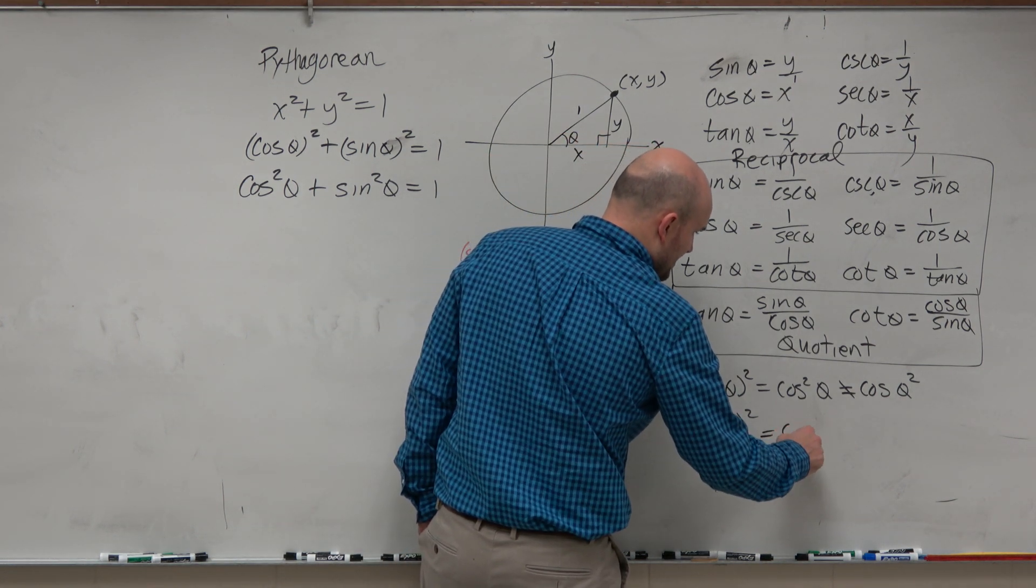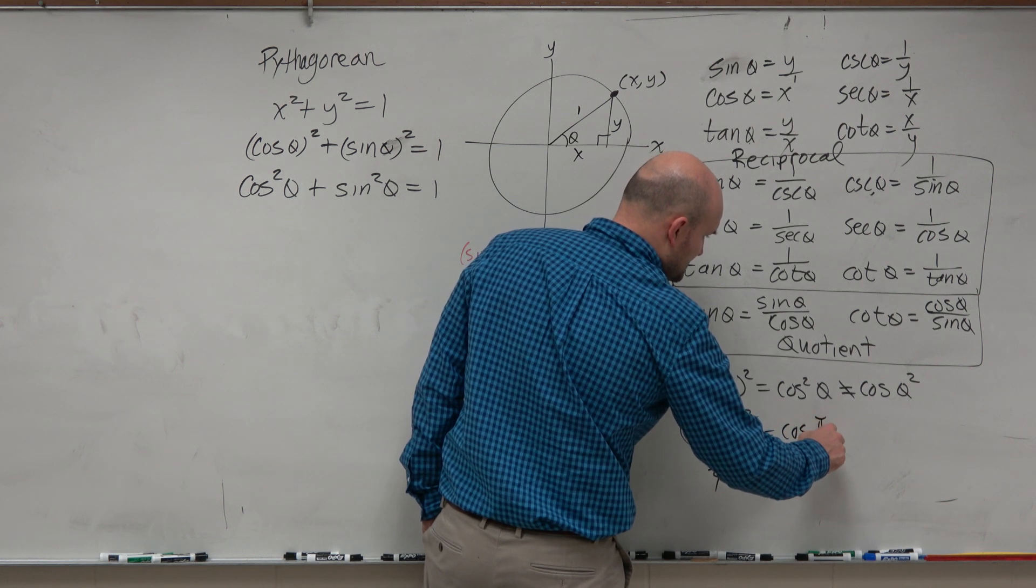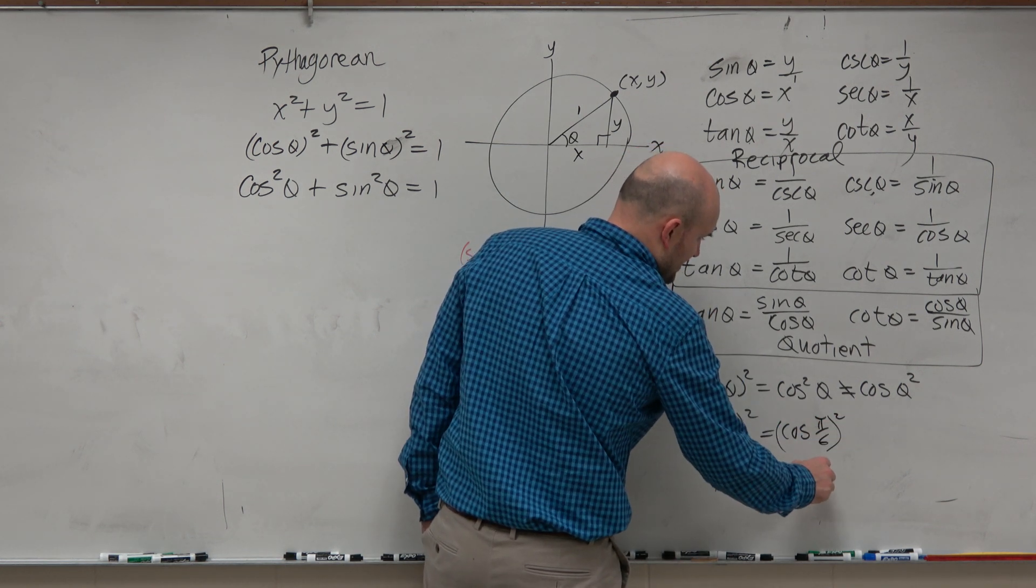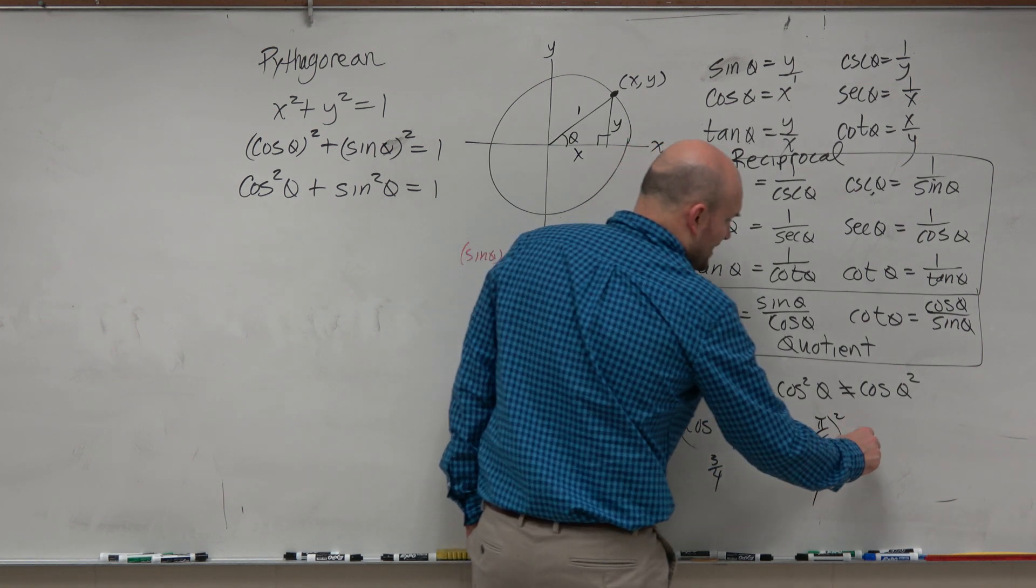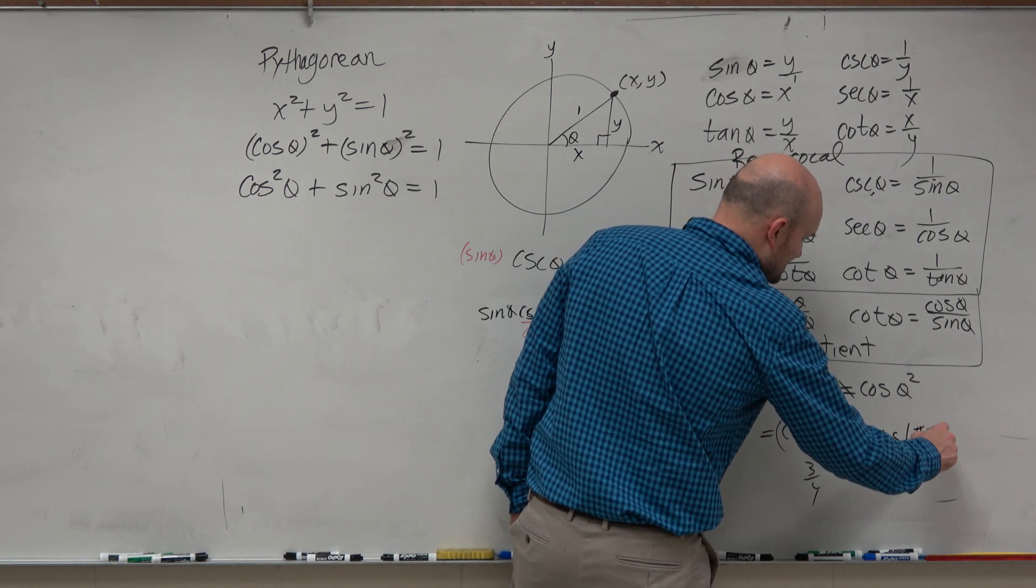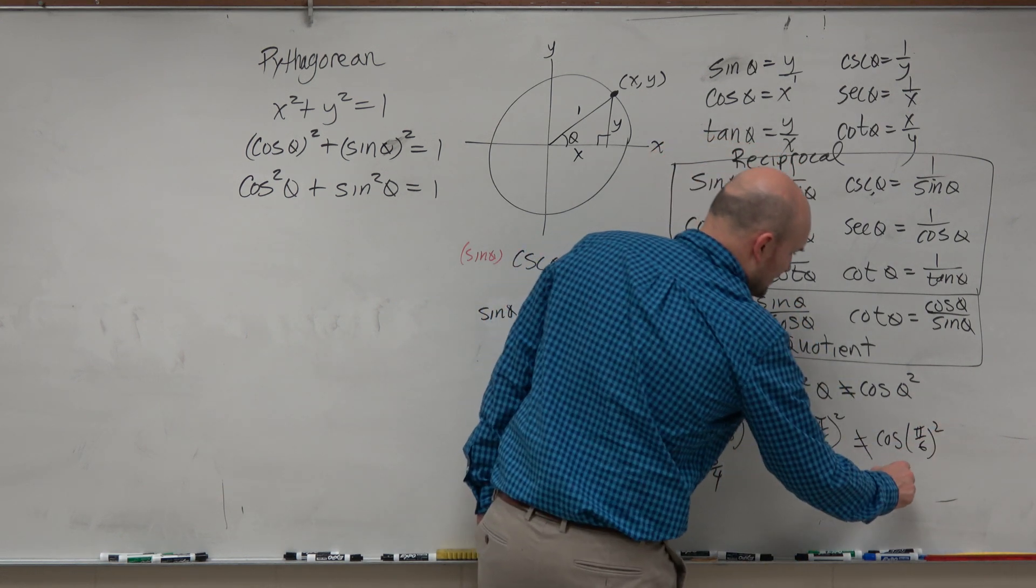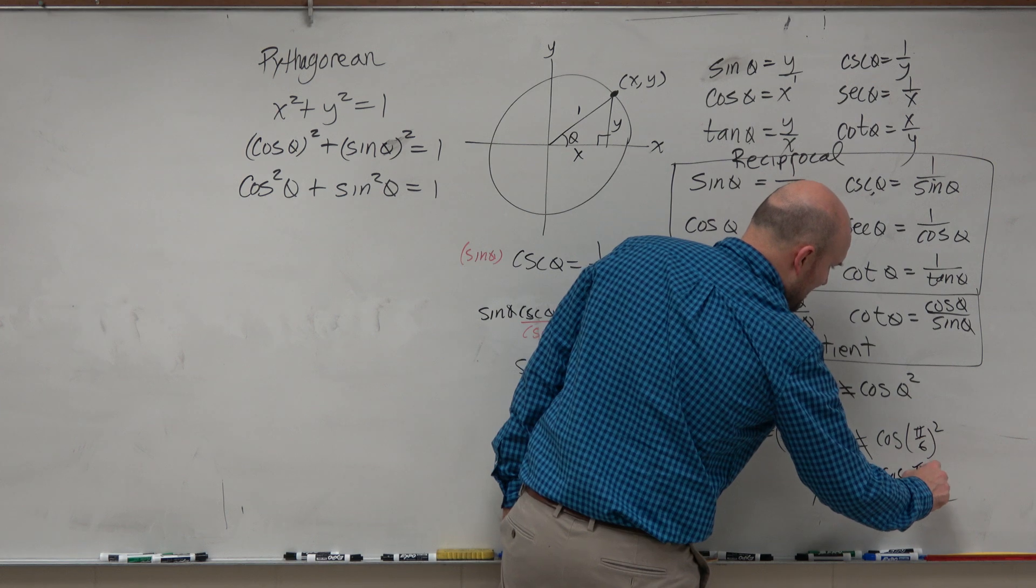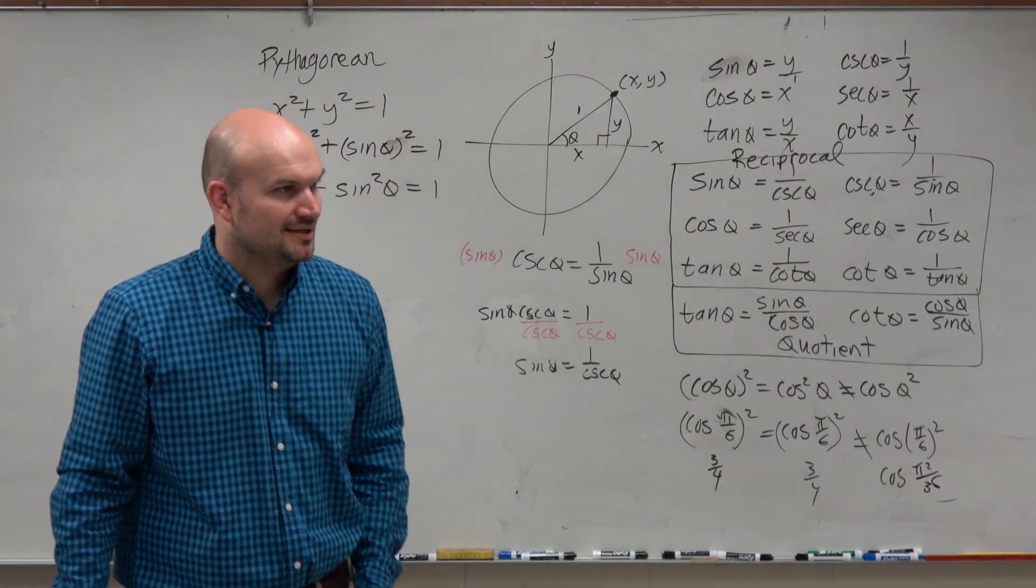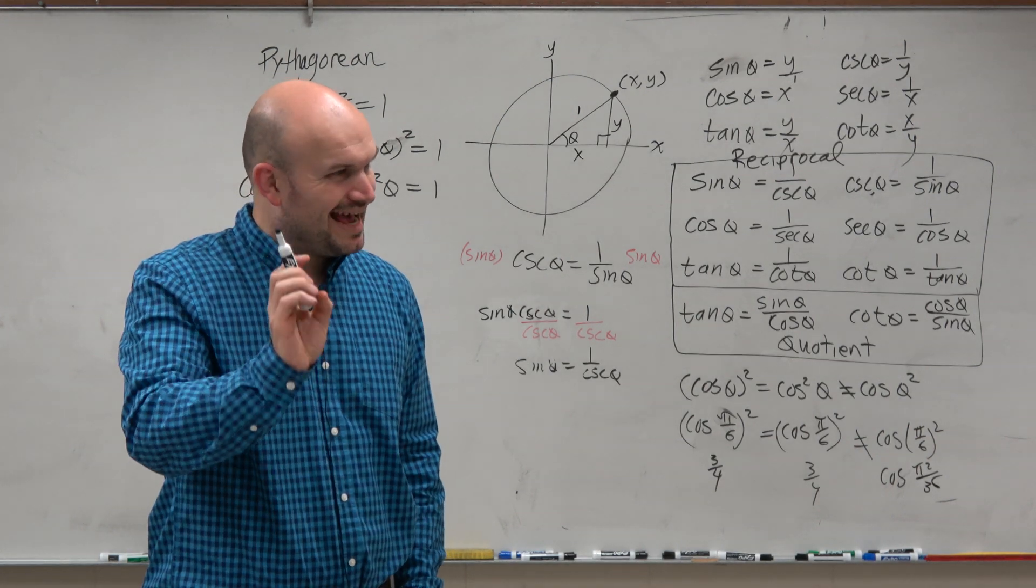Or if I did it this way, that's cosine of pi over 6, that just means the same thing. So that's 3 over 4. But if you write it like this, this is cosine of pi over 6 squared, which is the cosine of pi squared over 36. That's a completely different problem. So do not put the squared at the end.